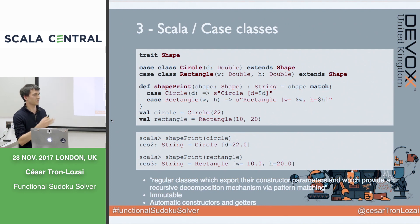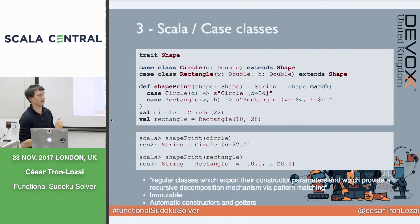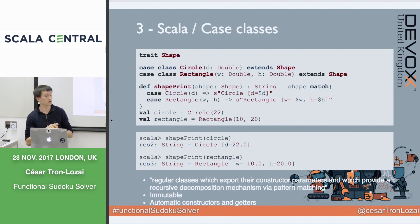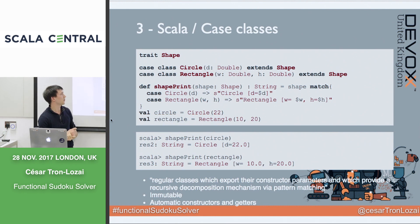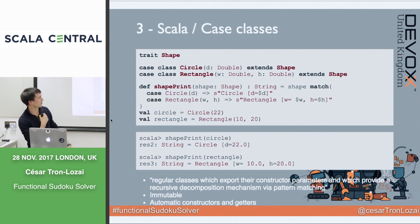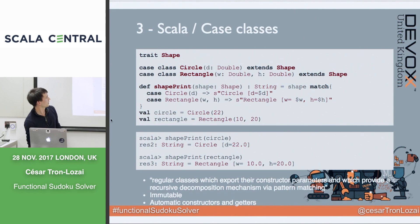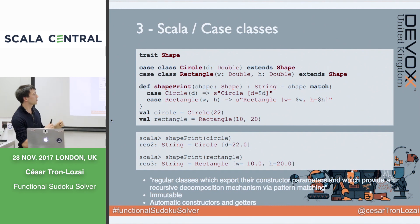In Java you might have an abstract method implemented in two classes, but in Scala and the functional world they prefer to take this out of the class and use pattern matching. Here I have a method that takes a shape and returns a message describing it. I do pattern matching with the case keyword and get access to the variables of the case class. If I have a circle it shows 'circle', if I have a rectangle it shows 'rectangle'. It's immutable, which is very useful.